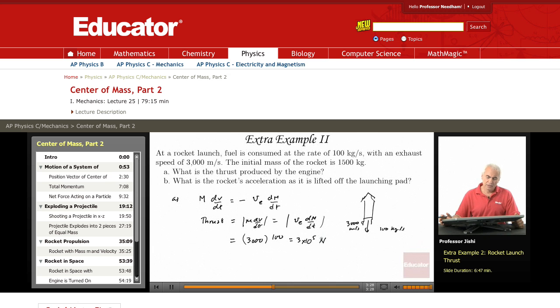So this is 3 times 10 to the 5 Newtons. This is the thrust on the rocket, the thrust produced by the engine. What is the rocket's acceleration as it is lifted off the launching pad?